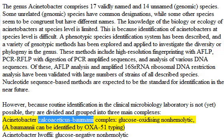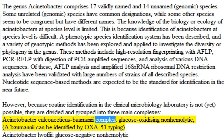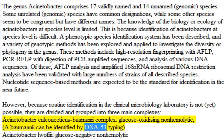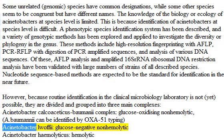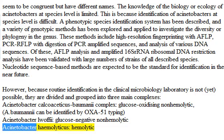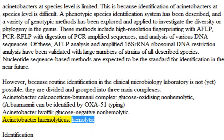The three complexes are: Acinetobacter calcoaceticus-baumannii complex, which is glucose-oxidizing and non-hemolytic — A. baumannii can be identified by OXA-51 typing; Acinetobacter lwoffii, which is glucose-negative and non-hemolytic; and Acinetobacter hemolyticus, which is hemolytic.